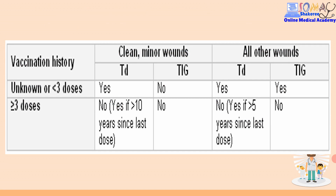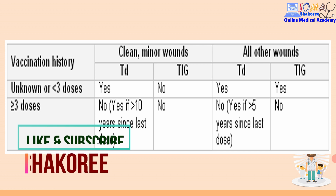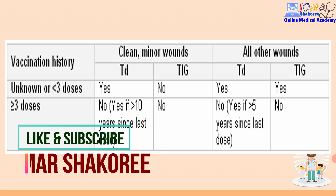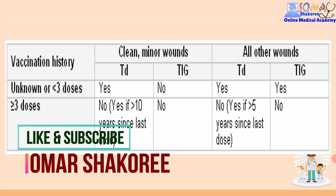Let me repeat: if we have a dirty wound in a non-immunized patient - the most common in our locality - we will give both. If we have a dirty wound in an immunized patient, we give nothing, but we will give tetanus toxoid if the patient received his last vaccination more than five years ago. For a clean wound in a non-immunized patient, we give tetanus toxoid only - no need for immunoglobulin. For a clean wound in an immunized patient, we give nothing unless the last vaccination was 10 years ago.